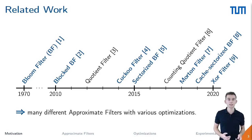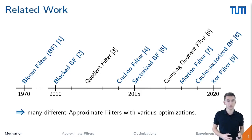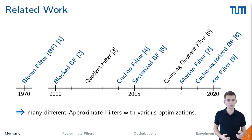Especially in the last decade, several new structures have been proposed. Furthermore, new optimizations like specialized hash functions or vectorization were introduced. In order to provide an apples-to-apples comparison between the filters, we re-implemented four Bloom filters and three fingerprint filters with all relevant optimizations and provide an extensive evaluation in our paper.